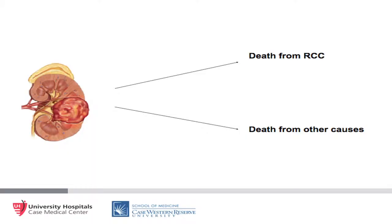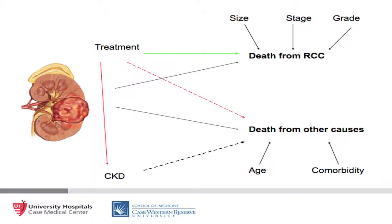If you treat the tumor, presumably you would decrease the risk of dying of kidney cancer. However, treatment may, at least in the short term, increase the risk of dying of other causes, mostly through postoperative mortality, and you may indirectly affect death from other causes through its effect on chronic kidney disease.